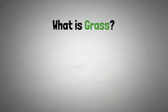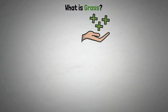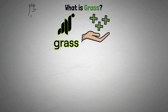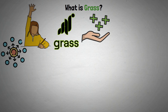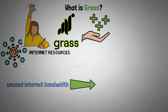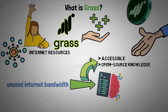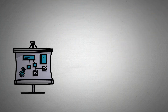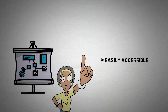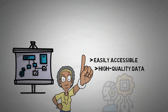So let's start with what is GRASS? Through equitable remuneration, the GRASS platform seeks to democratize and decentralize internet resources. By transforming unused internet bandwidth into useful AI training data, its network creates an accessible, open-source knowledge base and rewards contributors with GRASS tokens. The project was born out of the increasing demand for easily accessible, high-quality data for AI model training.